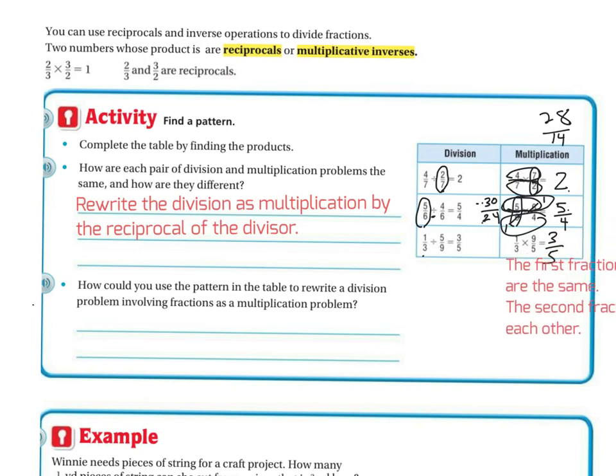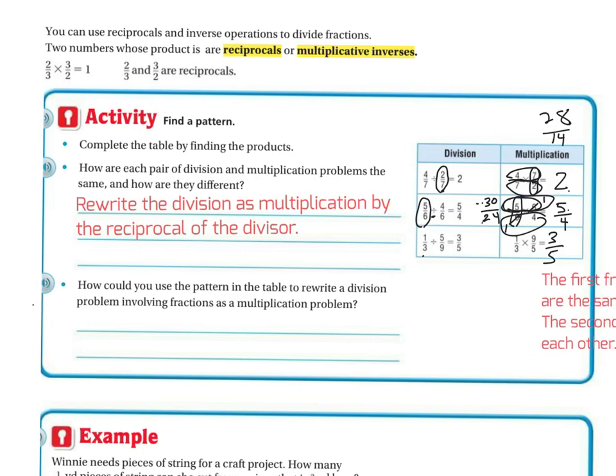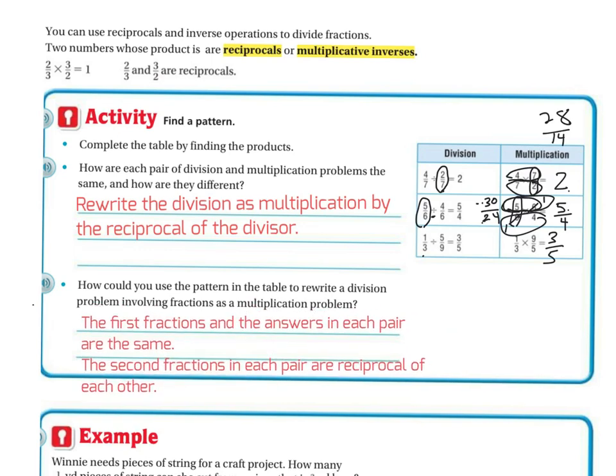It's just a little easier to visualize for some people. How do you use the pattern in the table to rewrite the division problem involving fractions as a multiplication problem? Well, first, the fraction and the answer in each pair are the same. And then the second fraction in each pair is the reciprocal of each other.